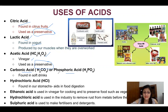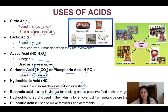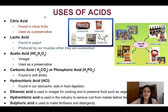Carbonic acid and phosphoric acid are used in our soft drinks. HCl is used in our stomachs to help in the digestion of food. Ethanoic acid is used in vinegar for cooking. Hydrochloric acid is also used in industry, and sulfuric acid is used in fertilizers, detergents, and in labs for experiments.